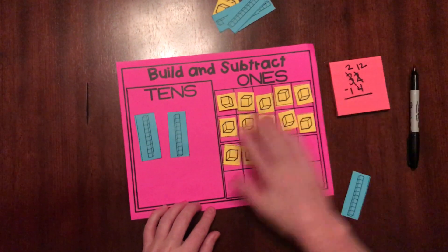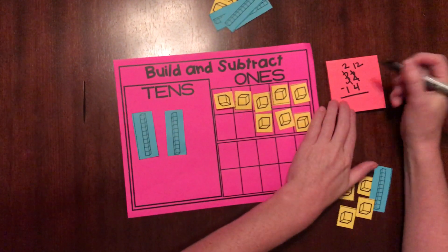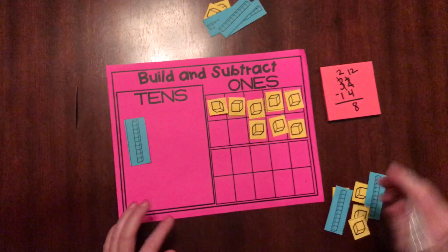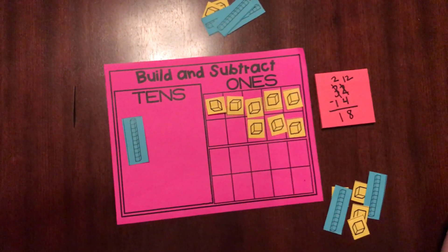Now I can do my subtraction. 12 take away 4 is 8. And 2 tens take away 1 ten. I have 1 ten left. So my answer is 18.